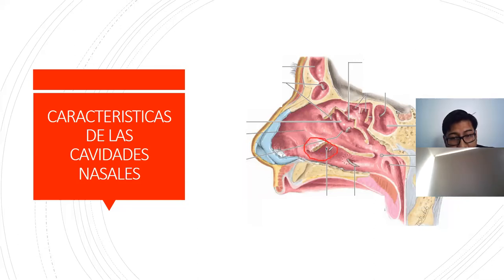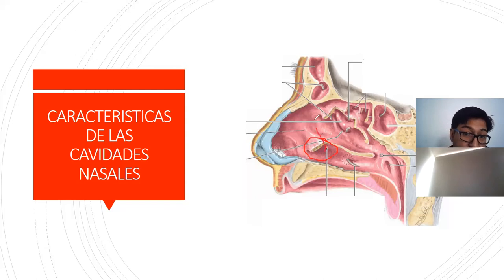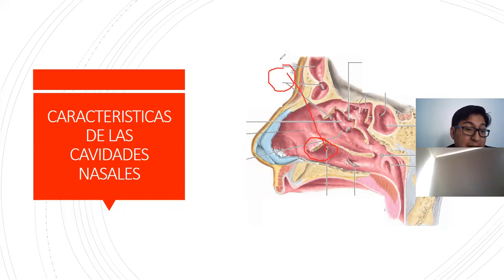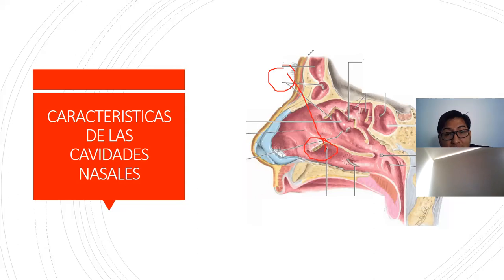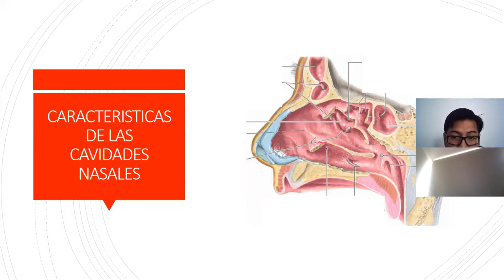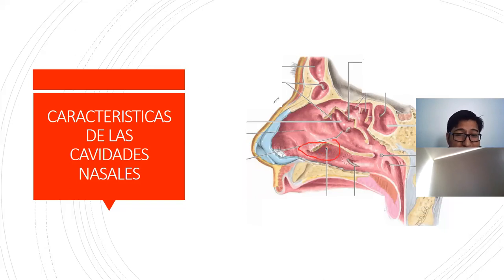Estas son las características del orificio del conducto nasolagrimal. Vamos a introducir una varilla y vamos a sacarla hasta el conducto lagrimal, la papila lagrimal, el lago lagrimal. Ahí están las lágrimas. Y entonces, cuando se prueban, van a este orificio.